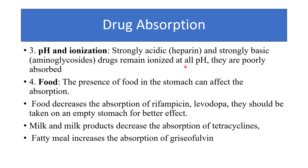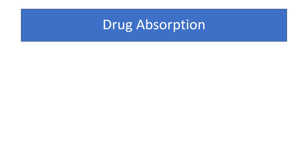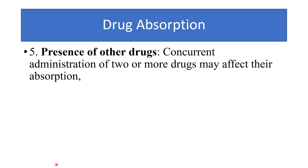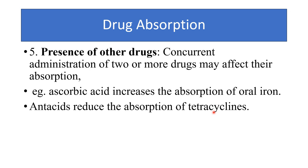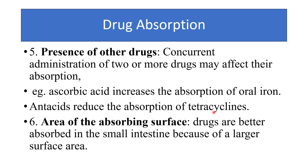Regarding food: the presence of food in the stomach can affect absorption. Food decreases the absorption of rifampicin and levodopa, which should be taken on an empty stomach for better effect. Milk and milk products decrease the absorption of tetracycline, while fatty milk increases the absorption of griseofulvin. Regarding drug interactions: concurrent administration of two or more drugs affects absorption — for example, ascorbic acid increases absorption of iron, while antacids reduce absorption of iron as well as tetracycline.